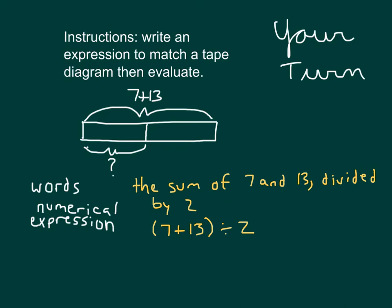Finally, our instructions do say to evaluate as well. Did you evaluate your expression? 7 plus 13 is 20, divided by 2. That also is equal to 20 halves, and 20 halves does equal 10. So our words match our numerical expression, and then we worked to evaluate it as we were looking at that tape diagram.